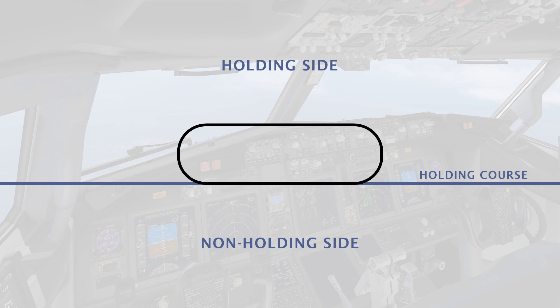You can enter a holding pattern several different ways. There's a parallel, direct, and offset entry. The most common is direct entry. The other two — parallel and offset — are more advanced and will not be covered here. The reciprocal of the holding course is called, you guessed it, the reciprocal.